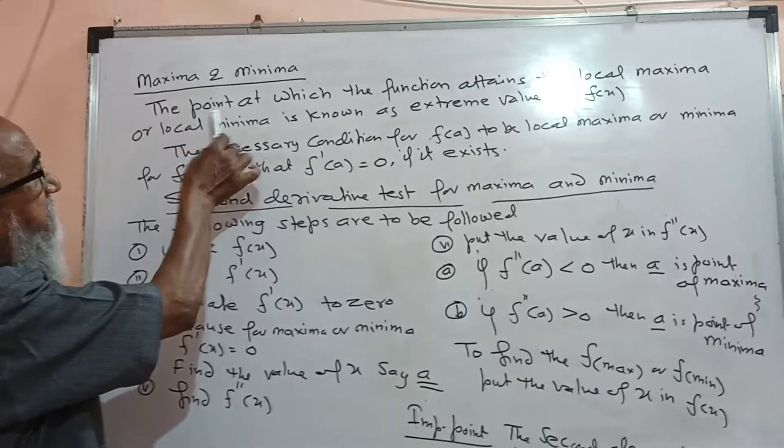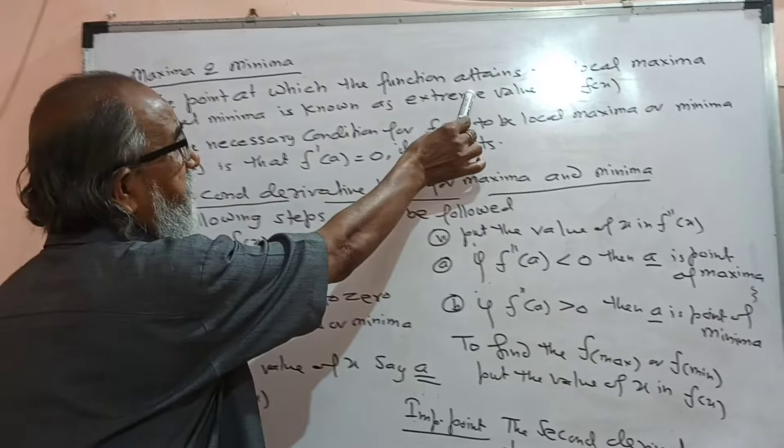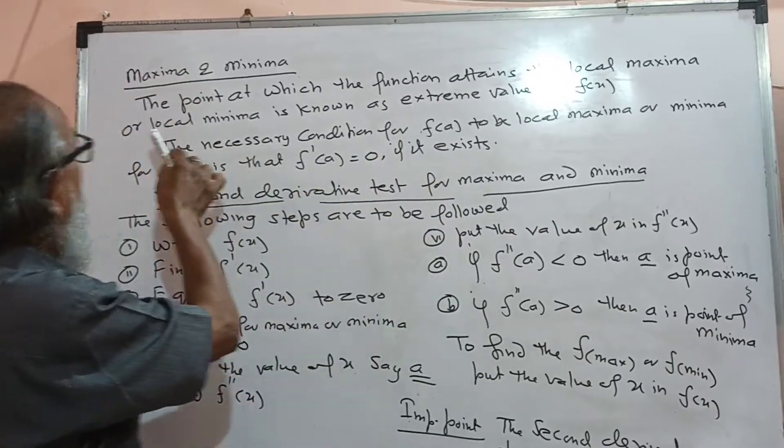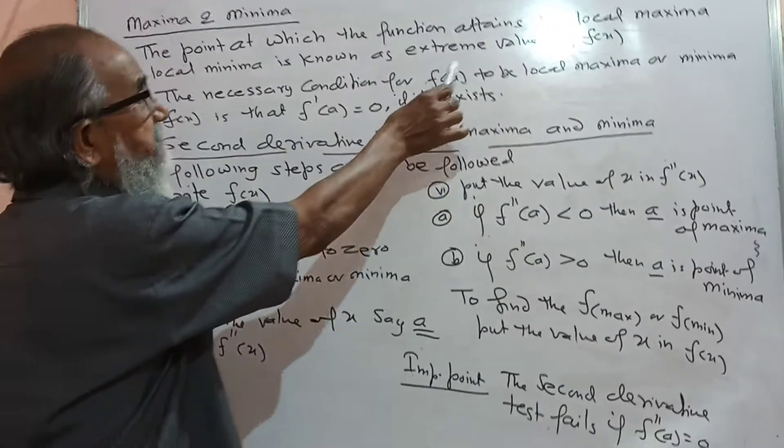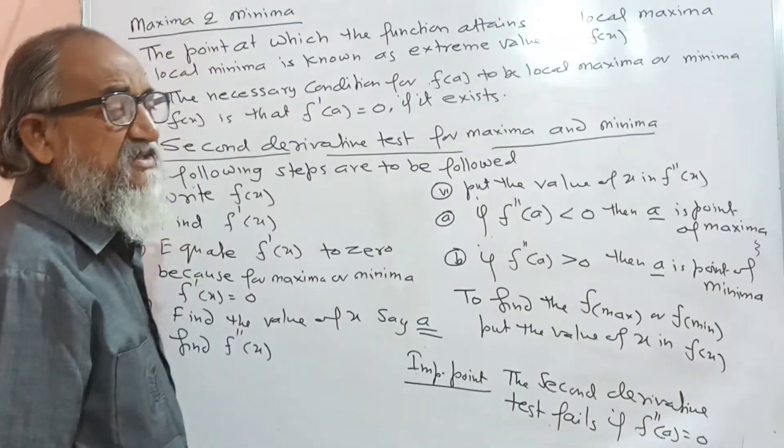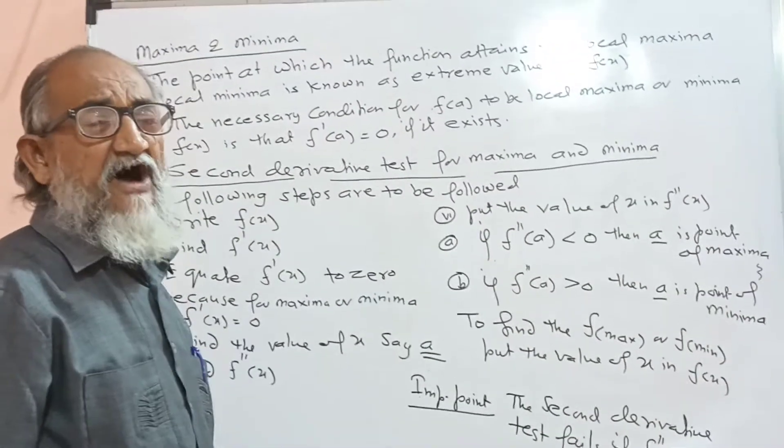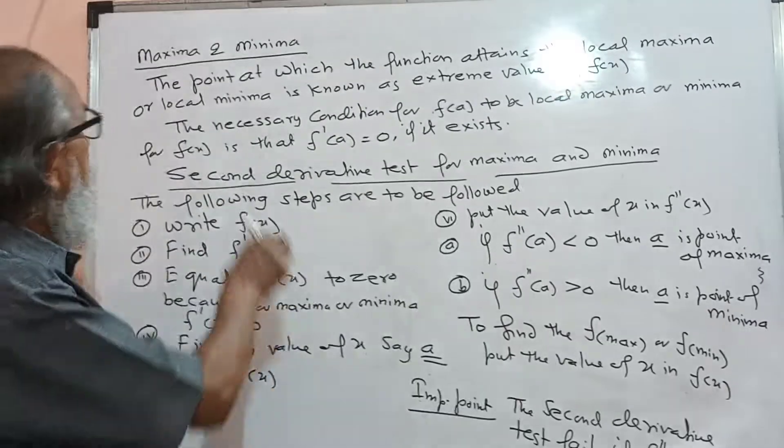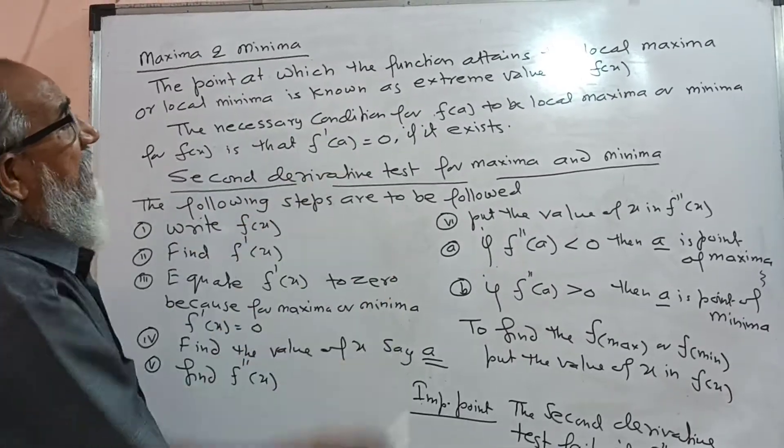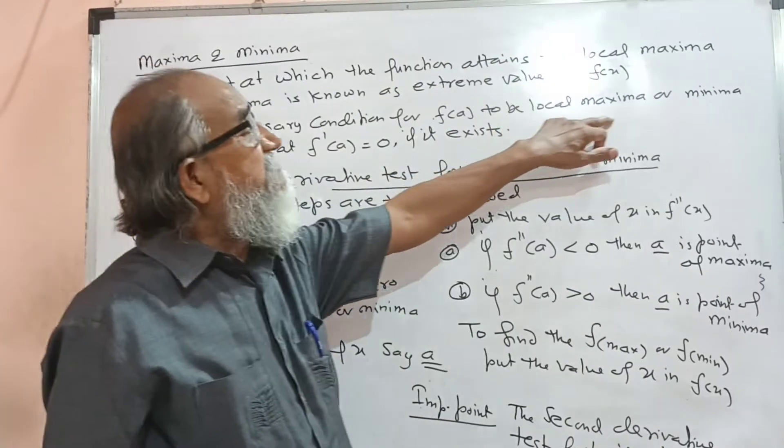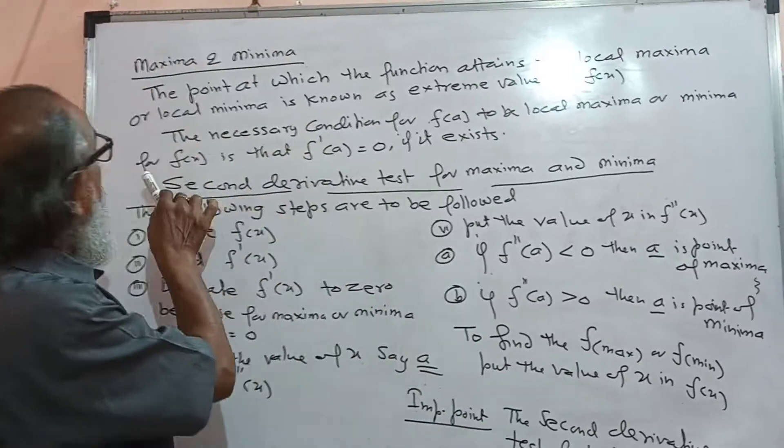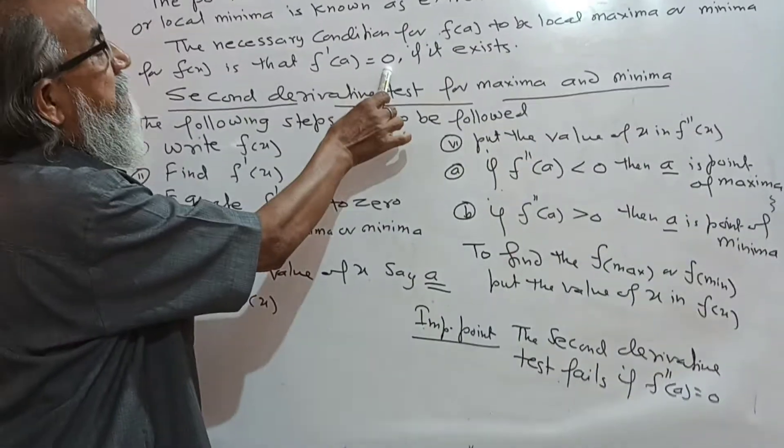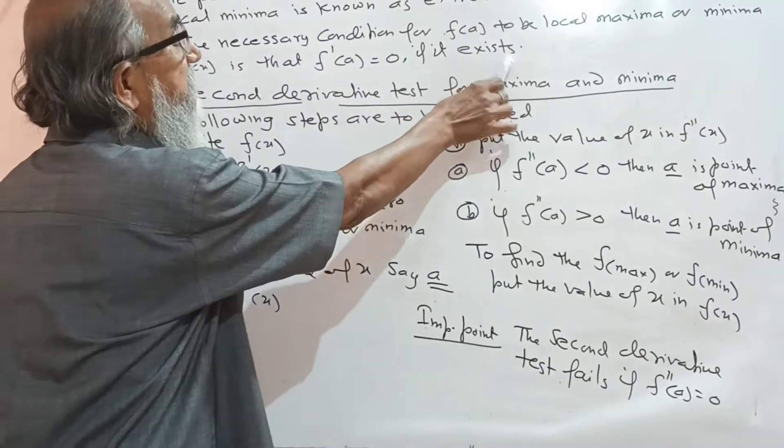The point at which the function attains the local maxima or local minima is known as the extreme value of f(x). This is also known as a point of extremum. The necessary condition for f(x) to be a local maxima or minima is that f'(a) equals 0, if it exists.